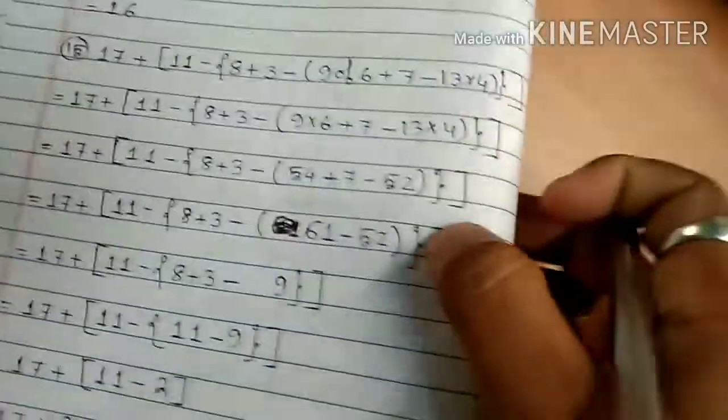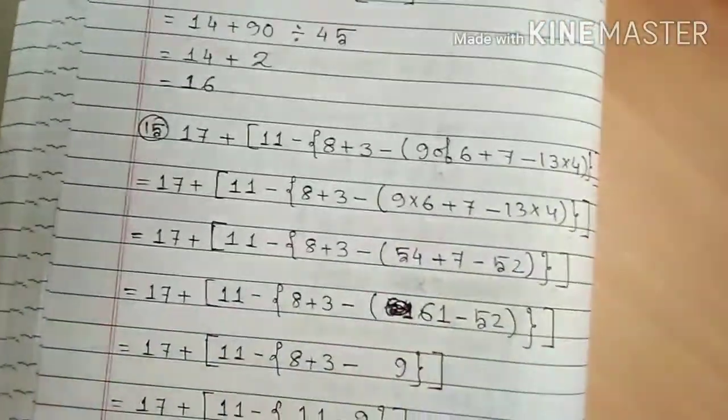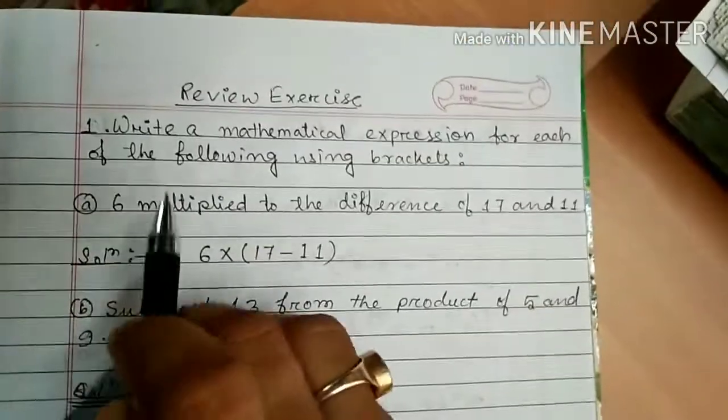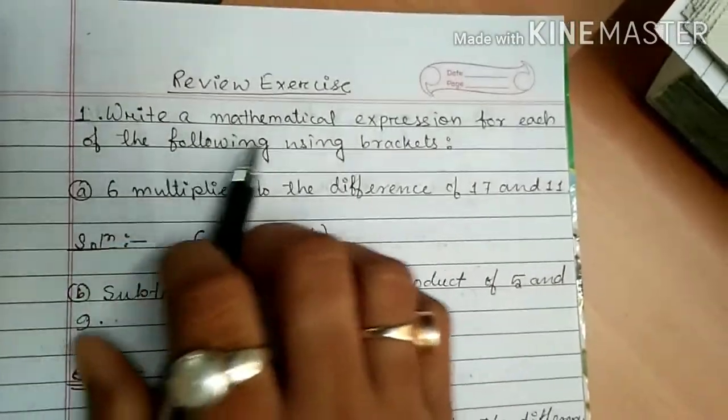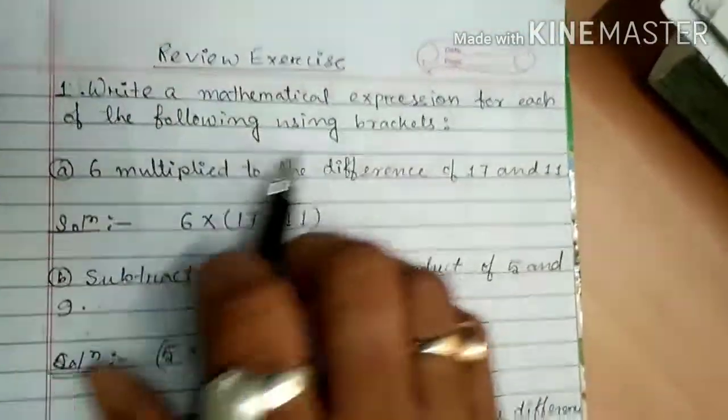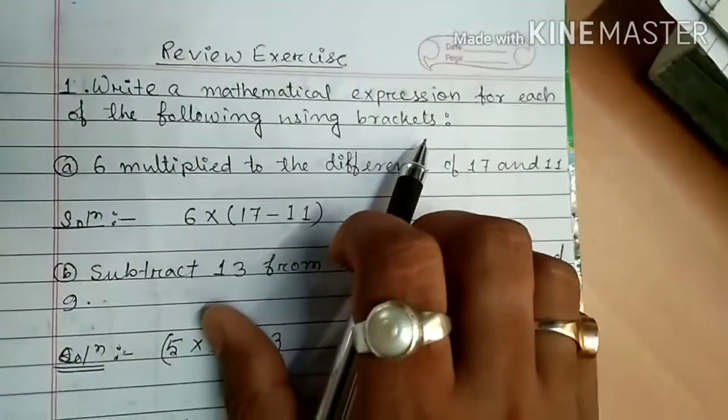Next I will do the review exercise. The review exercise says: write a mathematical expression for each of the following using brackets.